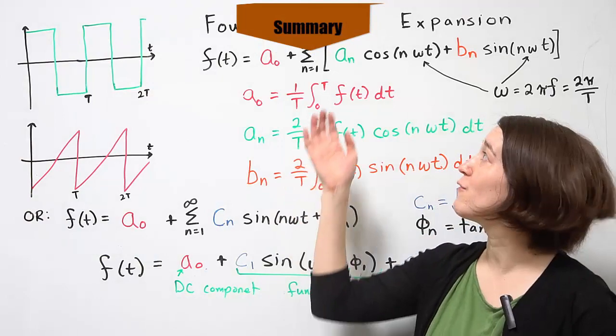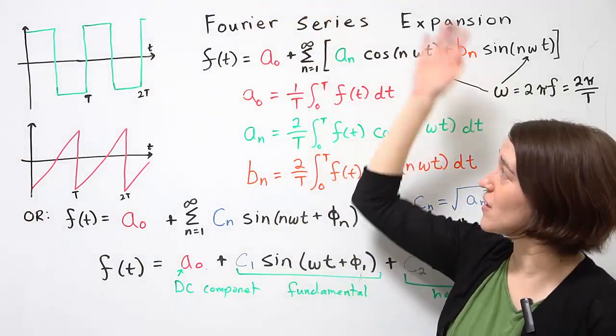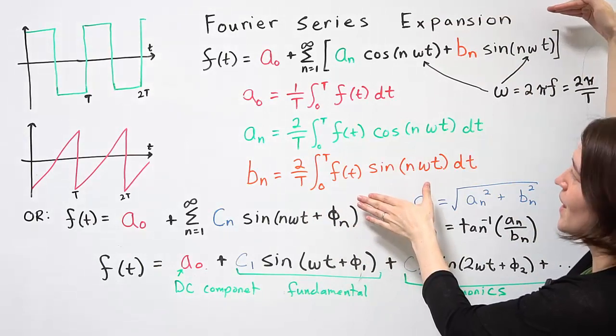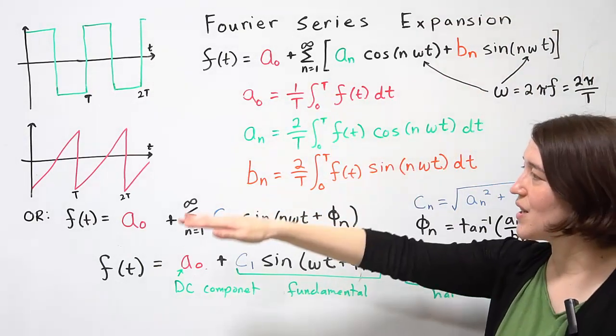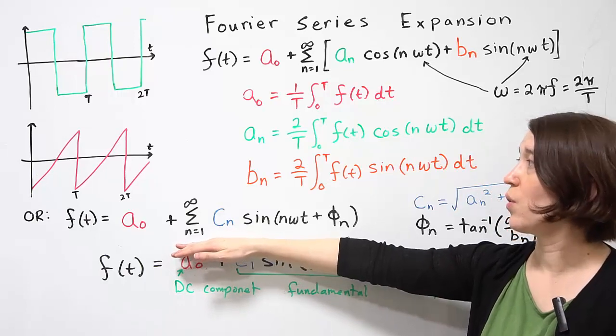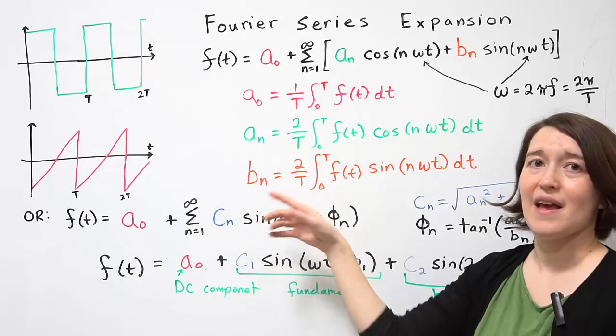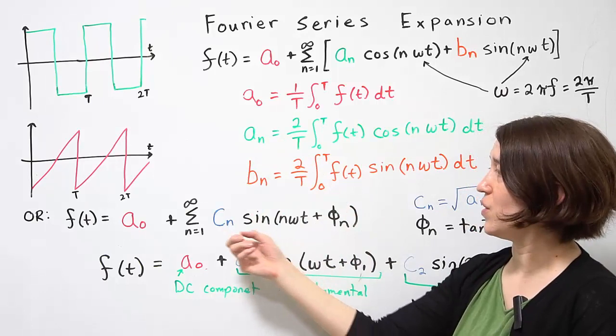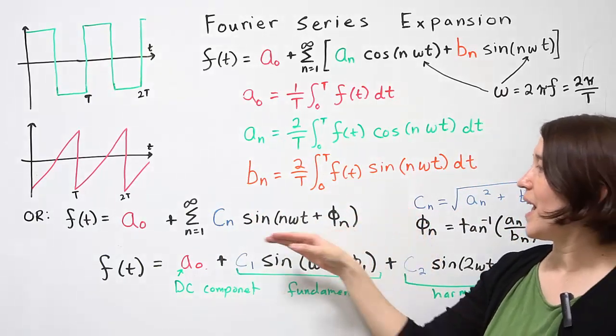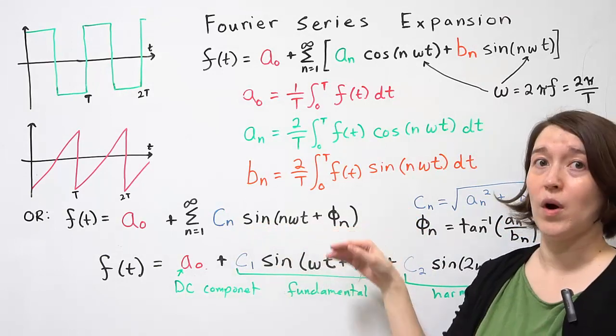We've defined the full Fourier series expansion, which is given here in this definition. However, we tend to use this form of the Fourier series expansion, where we combine the aₙ and bₙ terms into one new coefficient, cₙ, defined here. And we use just one term.